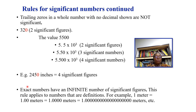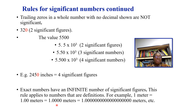We also have exact numbers that have an infinite number of significant figures. This rule applies to numbers that are definitions. For example, one meter can be written as 1.00 meters, 1.0000 meters, or with an infinite number of zeros — it remains an exact number.